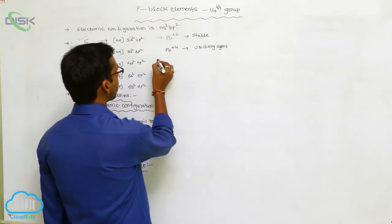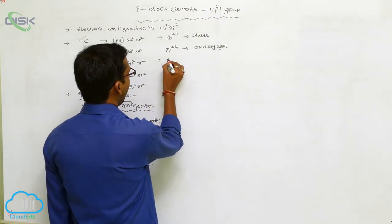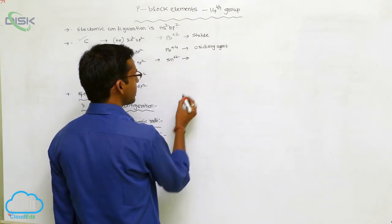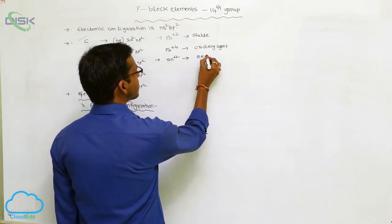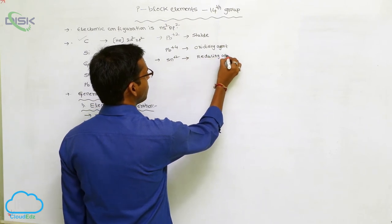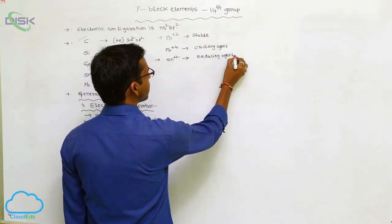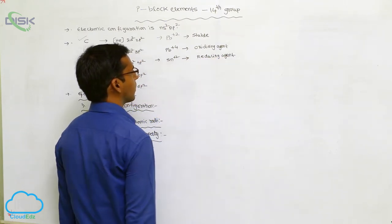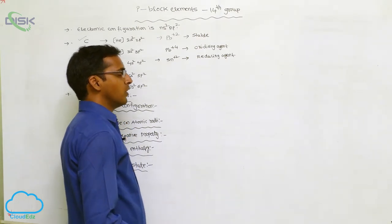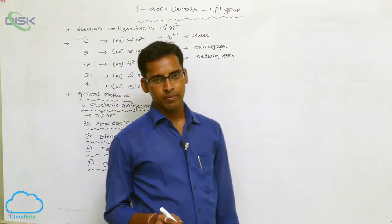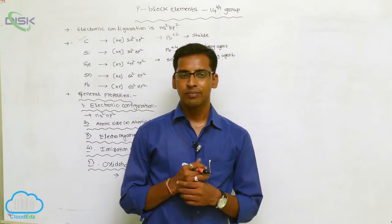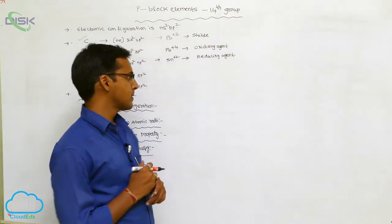Tin in the +2 state (Sn²⁺) acts as a reducing agent, while Sn⁴⁺ is unstable.